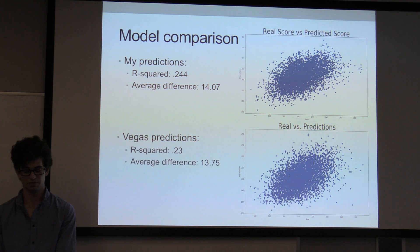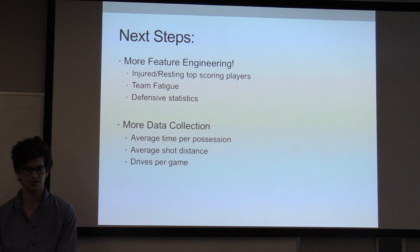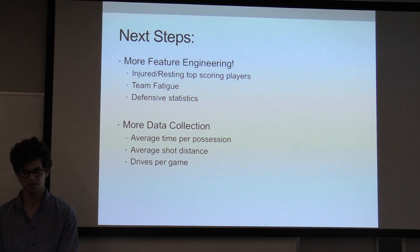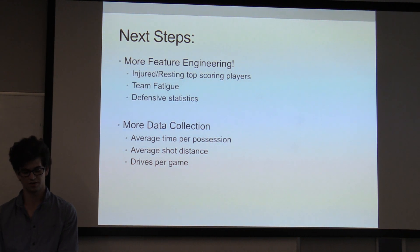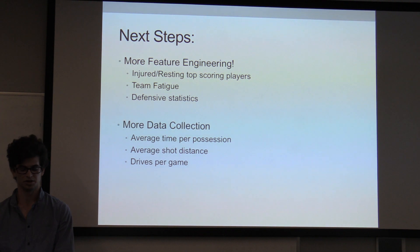My next steps are to add more feature engineering: add a feature for when a top scorer is resting or injured, create some team fatigue model or metric, and add in more defensive statistics. There are also some things I could not feature engineer with the data I have, so I would need to collect more things such as average time for possession, average shot distance, and drives per game.